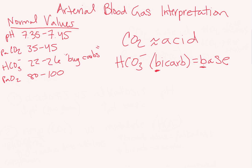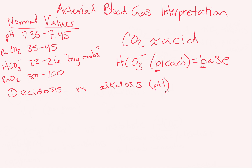When you look at ABGs, think three things in this order. The first is: is this acidosis or alkalosis? We determine that by looking at your pH. A normal pH is 7.35 to 7.45. If our pH is lower than that, it is acidic — low pH is acidic. I like to think low lemon: lemons are acidic, and if you have a low pH, you have an acidic pH. Alkalosis, on the other hand, means basic — so a high pH means you have a basic pH.